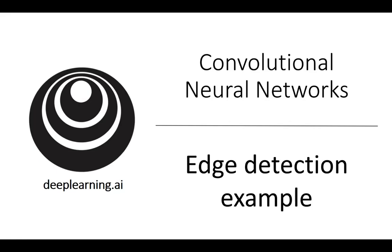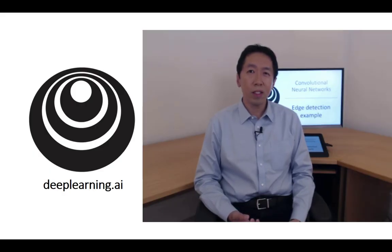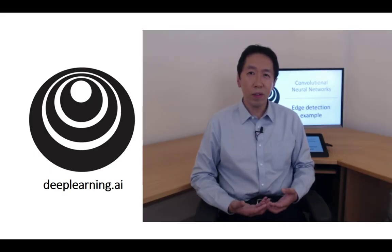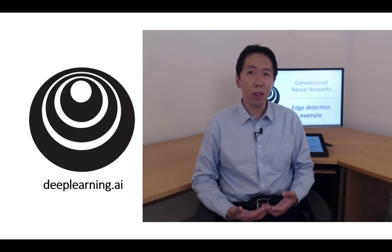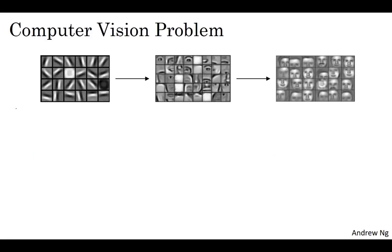The convolution operation is one of the fundamental building blocks of a convolutional neural network. Using edge detection as the motivating example, in this video you'll see how the convolution operation works. In previous videos, I've talked about how the earlier layers of the neural network might detect edges, and then the somewhat later layers might detect parts of objects, and then even later layers might detect parts of complete objects like people's faces. In this video, you'll see how you can detect edges in an image.